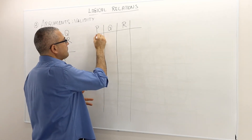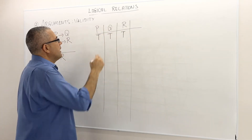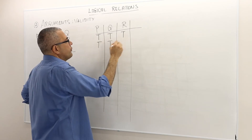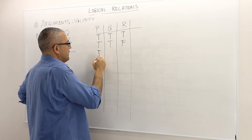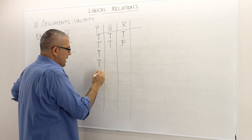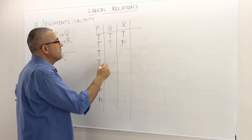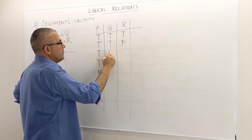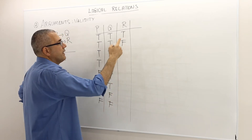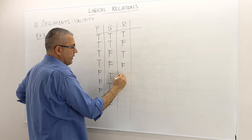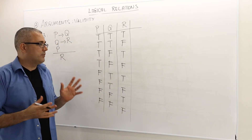The cases range from all three true, down to true-true-false, and so on. A trick I use: for the first column I put four trues then four falses — total of eight. For the second column I put two trues, two falses, two trues, two falses. And for the third column I alternate true, false, true, false, true, false, true, false. These cover all eight possible cases.